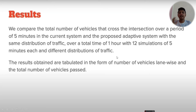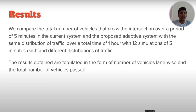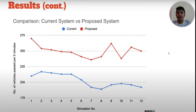For the results, we compare the total number of vehicles crossing the intersection over 5-minute periods in the current system versus the proposed adaptive system, using 12 simulations of 5 minutes each with different traffic distributions over 1 hour. Results are tabulated lane-wise and as total vehicles passed. The graph shows simulation number versus number of vehicles passed per 5 minutes — the red line represents the proposed system and the blue line represents the current system. The proposed system consistently shows more vehicles passing.